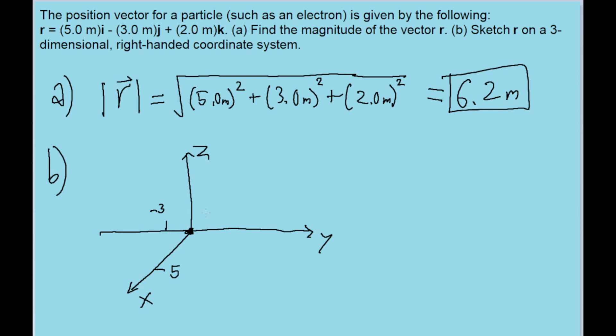And then in the k, which corresponds to the z-axis, there's a positive 2. So up around here somewhere. And now we just have to draw an arrow pointing to where we think that arrow would go.